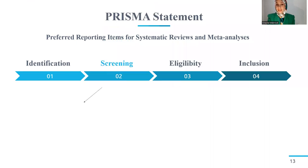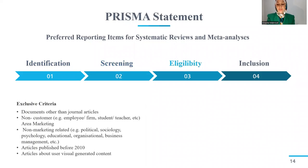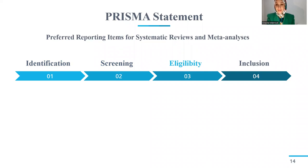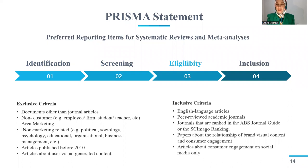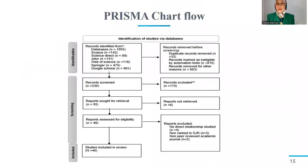The second step is screening. We used Covidence software, which is very useful, and started with title and abstract screening. After excluding irrelevant articles, we moved to full-text screening. The third step is eligibility — to ensure quality, exclusive and inclusive criteria were adopted. Our final PRISMA flow chart summarizes the whole process of collecting and selecting articles: we started with 1,955 articles and ended with only 40 articles ready for analysis and discussion.